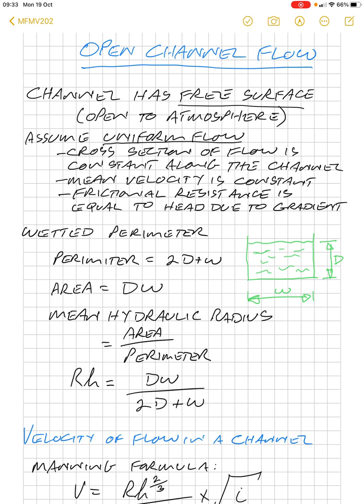Secondly, that the mean velocity is constant—that the velocity of the flow along the channel is essentially the same. And also that the frictional resistance is equal to the head due to the gradient. So in other words, the flow is caused by the change in head, and the velocity of the flow is dependent on the resistance to that flow which is due to friction on the surface.